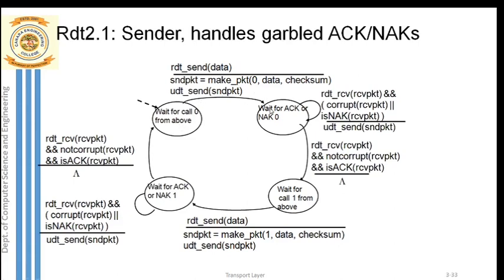Once the packet is sent, the sender moves to the next state: waiting for the acknowledgement to arrive for this particular packet. The sender may expect a positive or a negative acknowledgement. The first case is if the acknowledgement received is a negative acknowledgement. When does the sender receive a negative ACK? That is when the receiver receives erroneous or corrupted data — in that case, the receiver sends a negative acknowledgement to the sender.